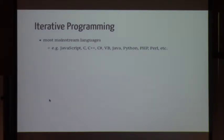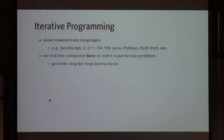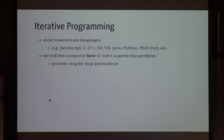Most mainstream languages today — any C family language — are iterative or imperative type programming languages. That means we tell the computer how to solve a problem. We literally tell it: follow these steps, this is what I want you to do. That's gotten us very far. It's a very verbose style of programming because we have to be explicit about what we want, and we ourselves have to keep track of all the state management.